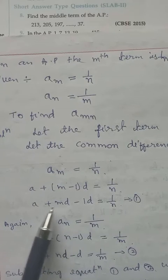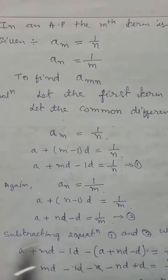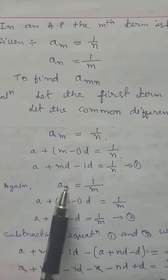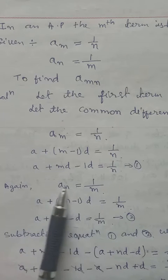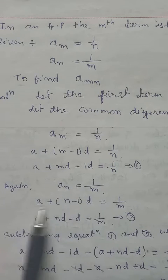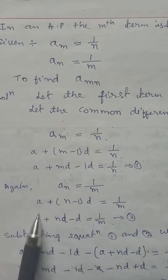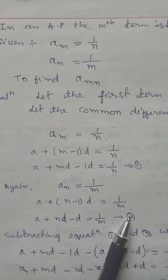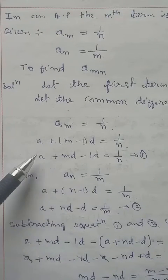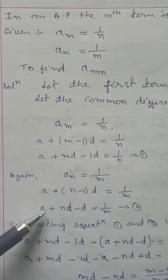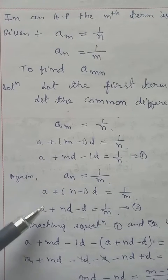Then we take the second condition from the question: a_n = 1/m. We again apply the general formula replacing n, giving a + (n−1)d = 1/m. We leave this as equation 2. We need to solve for a and d using these two equations.